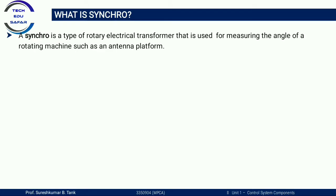Need for synchro: In remote control applications, it is sometimes necessary to have the angular motion of a shaft follow the motion of another shaft located at a distant place. This is difficult to achieve using mechanical linkage, so it is done by a servo system using synchros and other components. This is the basic need of synchro.